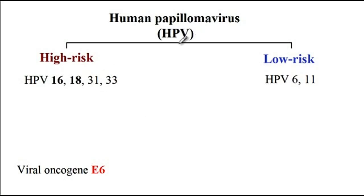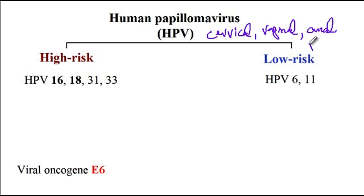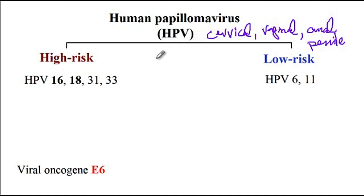Human papillomavirus is a sexually transmitted infection associated with cervical, vaginal, anal, penile, as well as nasopharyngeal cancers. First, I will talk about the pathophysiology of the HPV infection and how it can increase the risk of cervical cancer, then discuss the different vaccines available for HPV, the recommended timing for vaccination, and finally the recommended timing for cervical cancer screening.